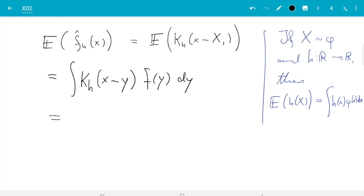Good, I want to use that k_h is symmetric, so that's also integral k_h(y minus x) f(y) dy. That doesn't change the value, but it makes the next step a bit easier. Now what I want to do is I want to use substitution.